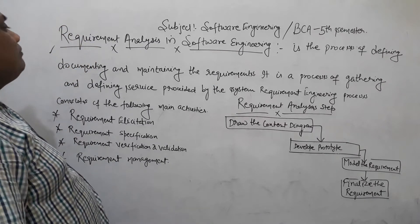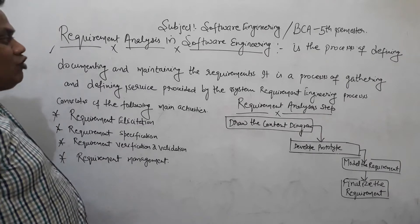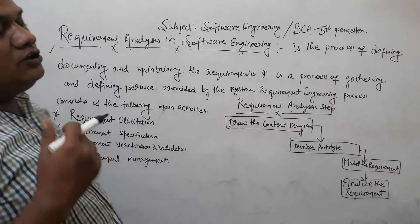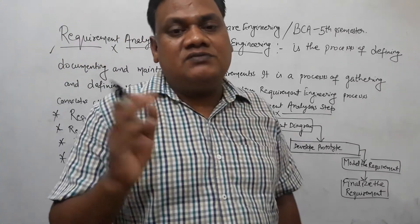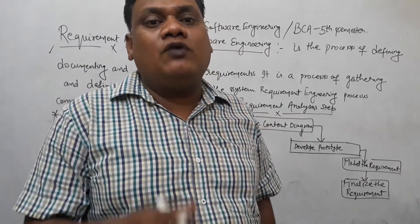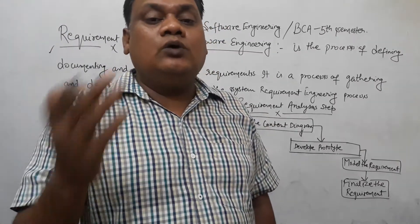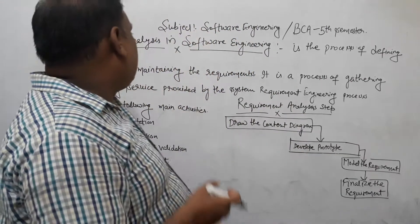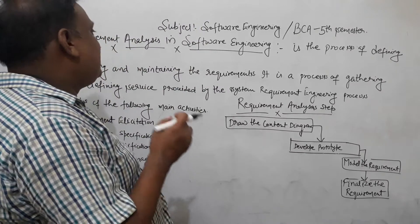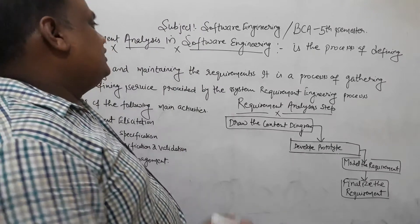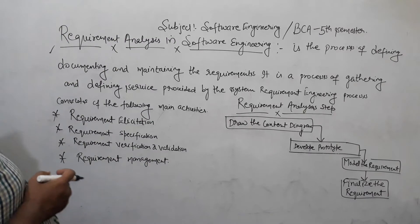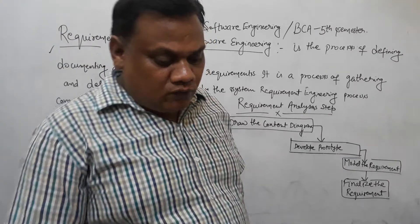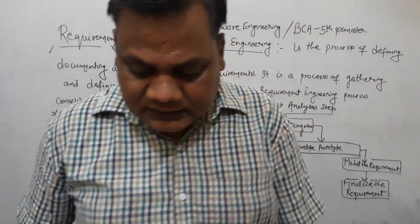When we talk about software development, we have to analyze the requirements. First of all, we have to discuss the software engineering requirements in BCA 5th semester. This is the software engineering requirements. Today our study is the Department of Analysis in Software Engineering. Now we have to create software, so we have to identify the basic needs.